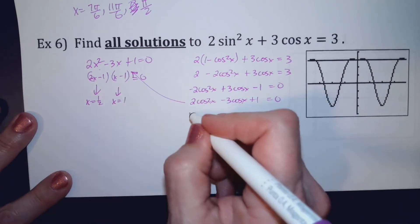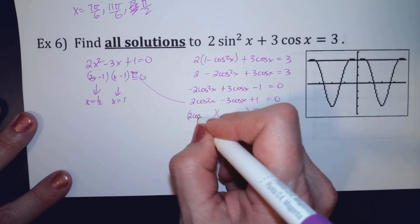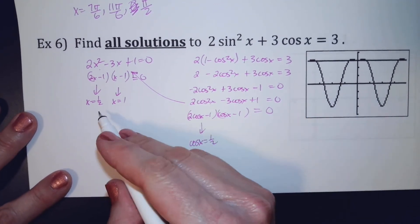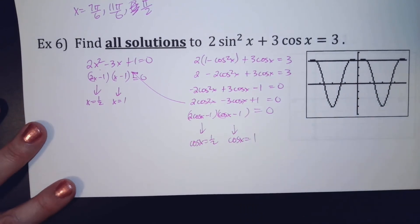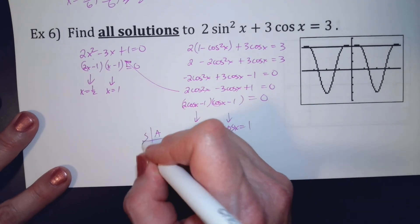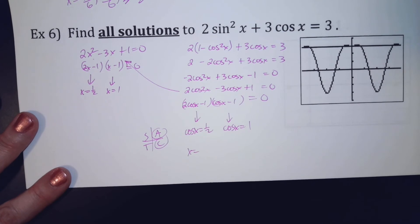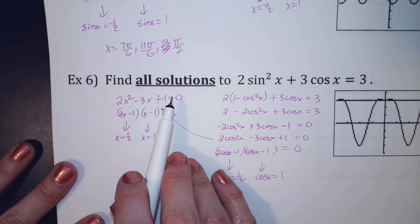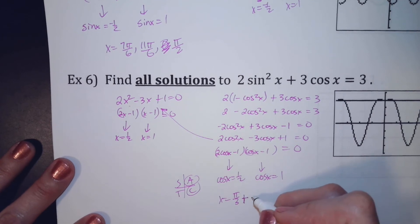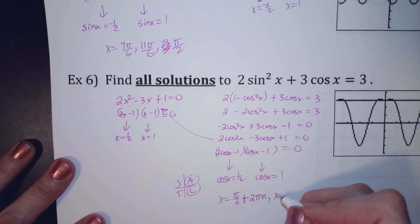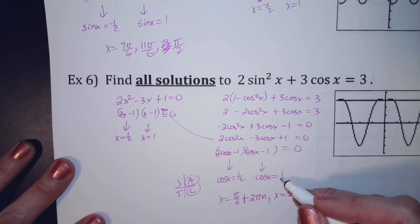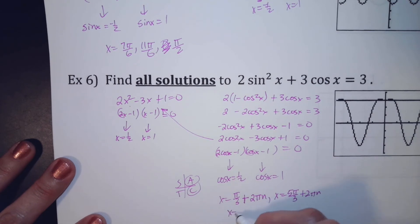It says all solutions, so the period of cosine is 2pi. When is cosine 1/2? That's at pi over 3 and 5pi over 3. So pi over 3 plus every 2pi·n, and 5pi over 3 plus every 2pi·n. When is cosine equal to 1? That happens at 0 degrees. So my third answer is 0 plus 2pi·n, or basically just 2pi·n.